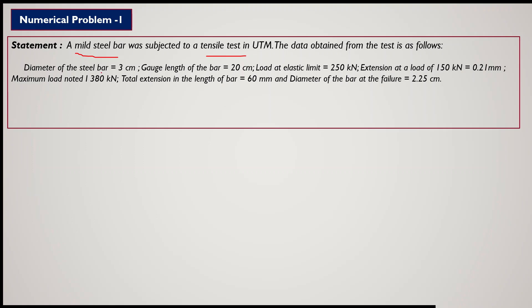The given data is: diameter of the steel bar is 3 cm, gauge length of the bar is 20 cm. The gauge length is that portion of the bar which is subjected to tensile force. Load at elastic limit is given — the maximum load where the elastic limit is reached is 250 kN. Beyond the elastic limit you get the yield point, so this load of 250 kN is up to the elastic limit.